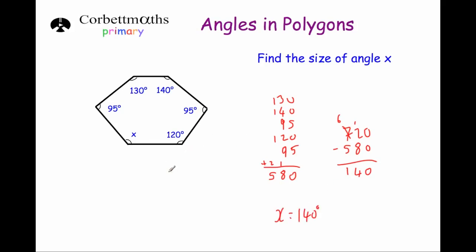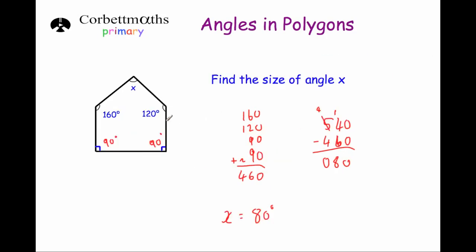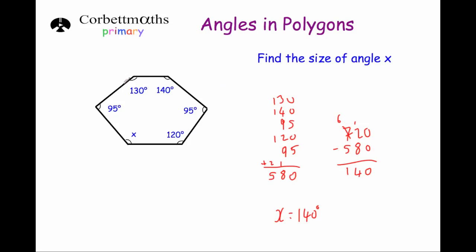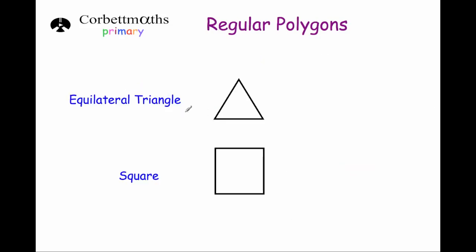The two questions we've just done have been for irregular polygons. This is an irregular pentagon — it's irregular because not all the angles are the same size and not all the sides are the same length. This hexagon is also irregular for the same reasons. Now we're going to look at some regular polygons.